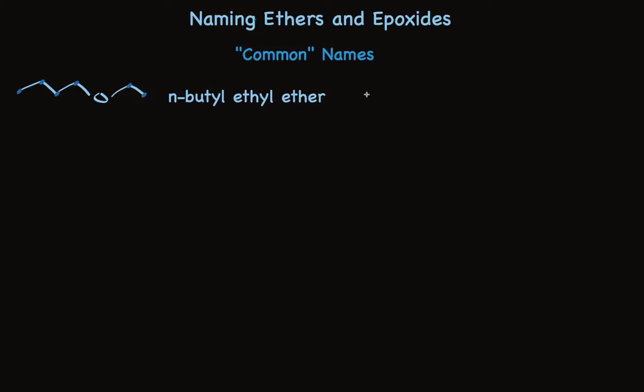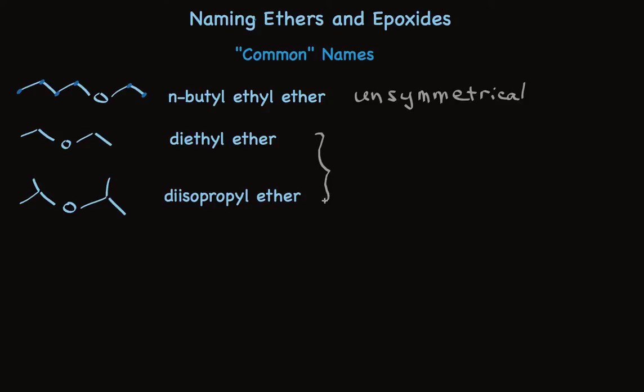It's referred to as unsymmetrical because the two alkyl groups are different. Here's a symmetrical ether, diethyl ether. The same two groups are attached to oxygen, so we say diethyl. Here's another one, diisopropyl ether. These fall in a category called symmetrical ether because the two alkyl groups attached to oxygen are the same.